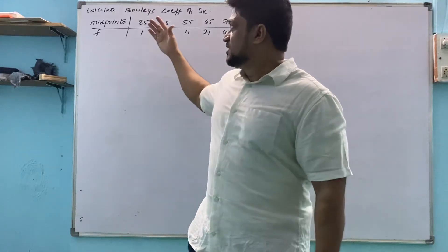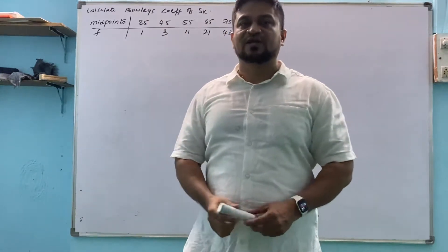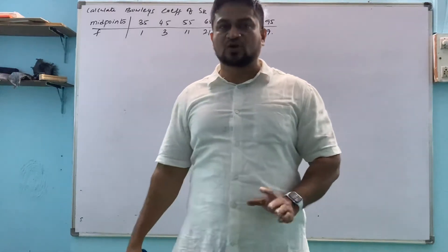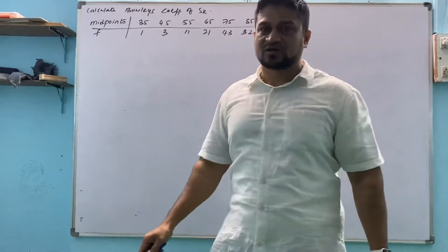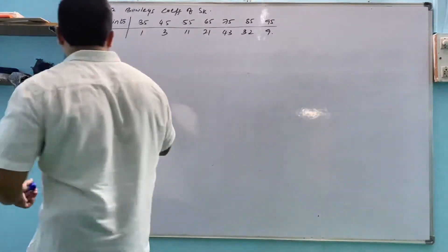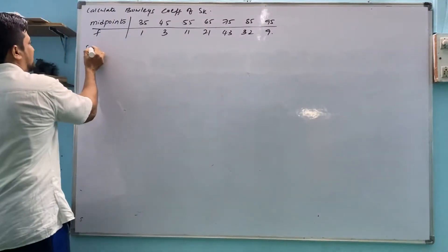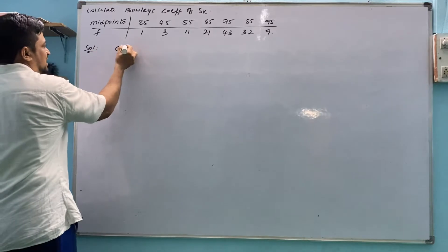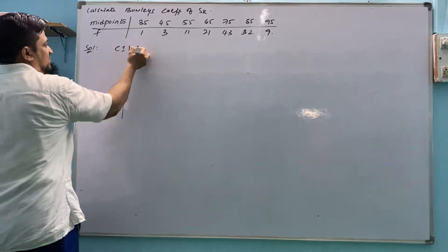So what we have to do is check whether the question is given in simple frequency distribution or not. That means class interval and frequency is given or not. We don't find class interval and frequency. Midpoints are given, so immediately we have to find class interval and frequency from this one.